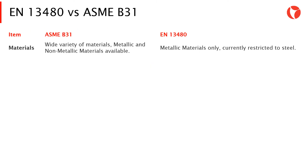Let's take a closer look at the main differences between these two design codes. Starting with materials: the ASME B31 code presents a wide variety of materials — both metallic and non-metallic materials are available. In contrast, the EN 13480 code presents metallic materials only, and is currently restricted to steel.